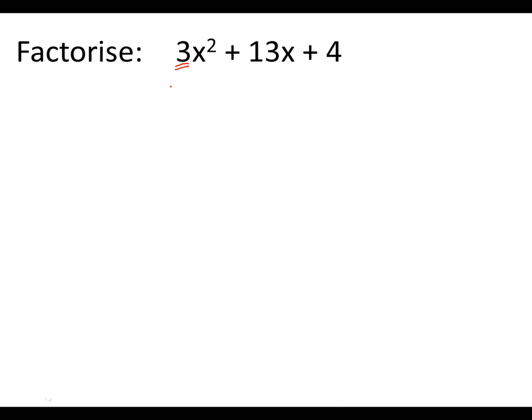So we're going to use Wright's theorem. So Wright's theorem tells us that we take the front number and we take the back number and we multiply them together. So 3 times 4 is 12.